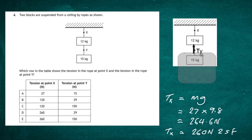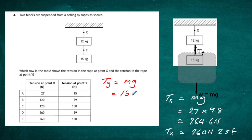Now we isolate just the 15-kilogram block. The tension TY acts upward and the weight acts downward. Since the block is stationary and not accelerating, TY equals mg. With m = 15 kilograms: TY = 15 × 9.8 = 147 newtons.